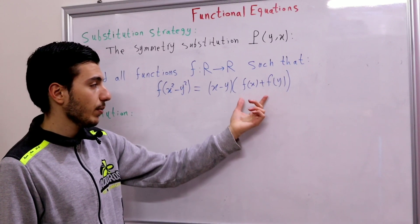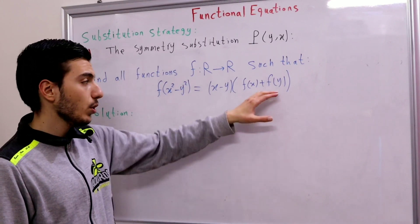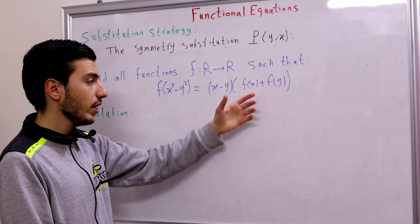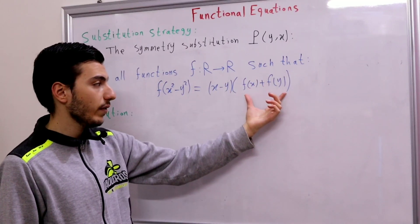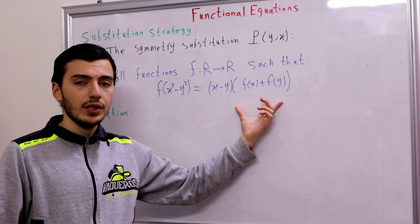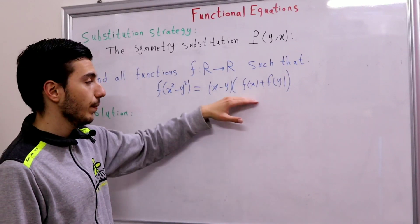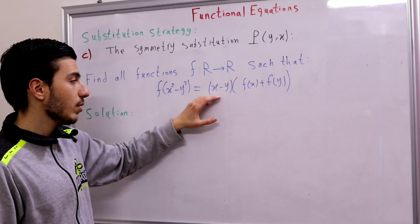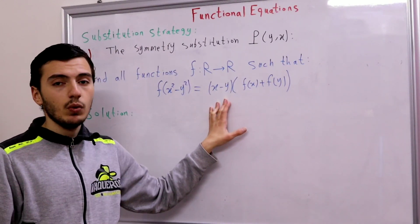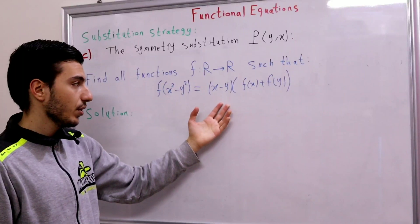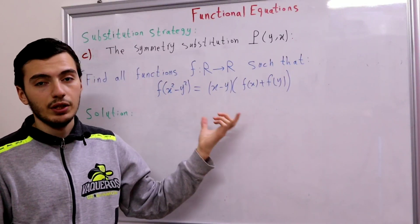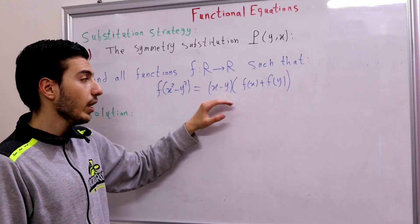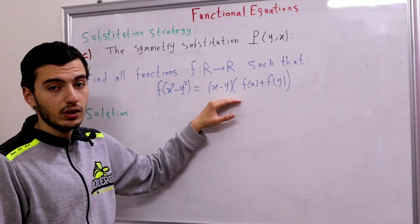Look at this expression f(x) + f(y). If we substitute x with y and y with x, we still get f(y) + f(x), which is the same as f(x) + f(y). So this expression stays the same. What about x - y? Well, x - y will become y - x, which is the negative of x - y.